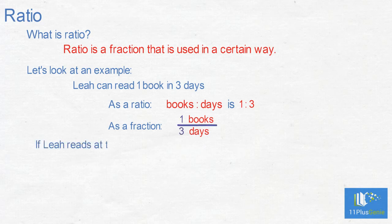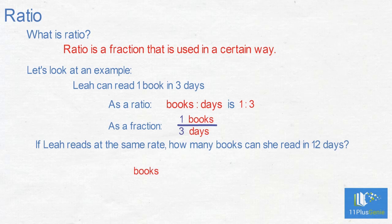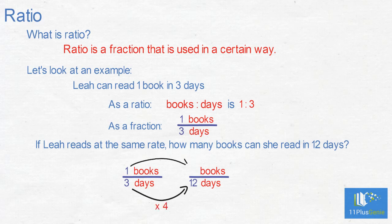If Leah reads at the same rate, how many books can she read in twelve days? Leah reads one book in three days. We must now find an equivalent fraction with twelve days. We multiply three by four to get twelve, so we must multiply one by four, which gives us four books. Leah can read four books in twelve days.